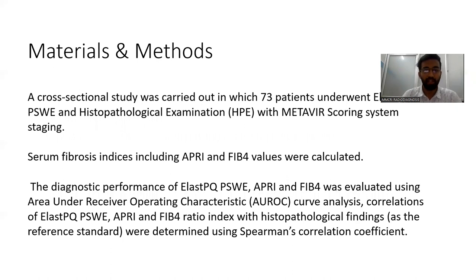Materials and Methods. A cross-sectional study was carried out in which 73 patients underwent ElastPQ point shear-wave elastography and histopathological examination (HPE) with Metavir scoring system and staging. Serum fibrosis indices including APRI and FIB4 values were calculated. Diagnostic performance was evaluated using Area Under Receiver Operating Characteristic (AUROC) curve analysis, and correlations with histopathological findings were determined using Spearman's correlation.